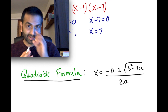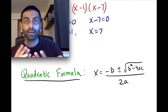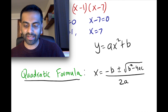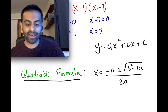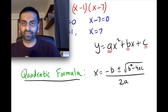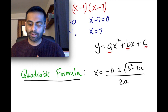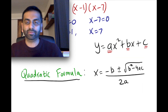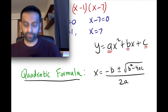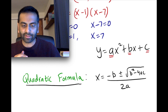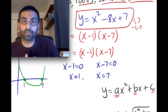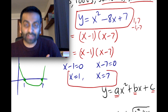The quadratic formula is a way to find the solutions or x-intercepts of a quadratic equation even if you can't factor it. If your parabola is written in standard form — y equals ax squared plus bx plus c — where a is the coefficient of x squared, b is the coefficient of the x term, and c is the constant, then this formula gives you the solutions. Let's test it on the equation we just factored to check our answers.